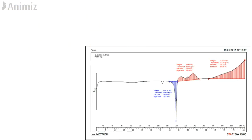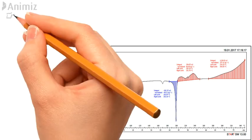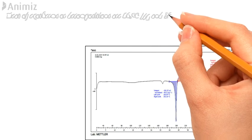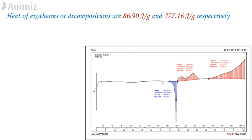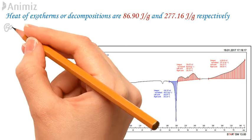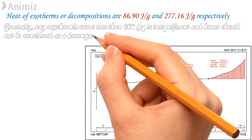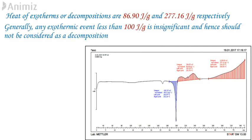After melting, two red regions can be seen which are positive deviations from the baseline. It is nothing but the exotherm or decomposition. However, every positive deviation or exotherm is not considerable decomposition. For example, recrystallization is an exothermic event, but need not be considered as the quantum of this event is insignificant and does not pose a considerable threat. In order to simplify this, it can be stated that any exothermic event less than 100 J per gram is insignificant and hence should not be considered as a decomposition.